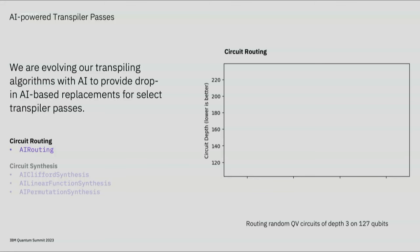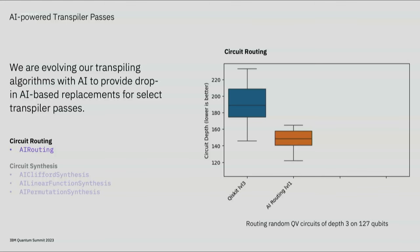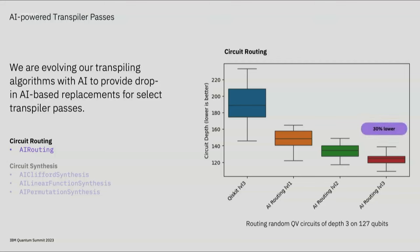Let's take a look at routing. This is a benchmark run on random circuits of depth 3 on 127 qubits. Here, Qiskit level 3 transpiler does a good job in routing, but can we do better? This is our level 1 AI routing, our level 2 AI routing, and our level 3 AI routing. That's a 30% improvement in circuit depth.